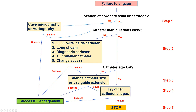This is the algorithm when there is difficulty engaging a coronary artery. The first question to ask is whether the location of the coronary ostia is understood. If we can clearly say yes, this is where the coronary is, then it becomes an issue of catheter manipulation and catheter size and shape selection. But if not, the alternative approach is to get some imaging to understand where the missing coronary artery is. What we did in this case is a cusp angiogram. Another option is to perform a full aortogram — 20 cc's over 3 seconds for a total of 60 cc's, usually in the LAO view — to understand the origin of the coronary artery.